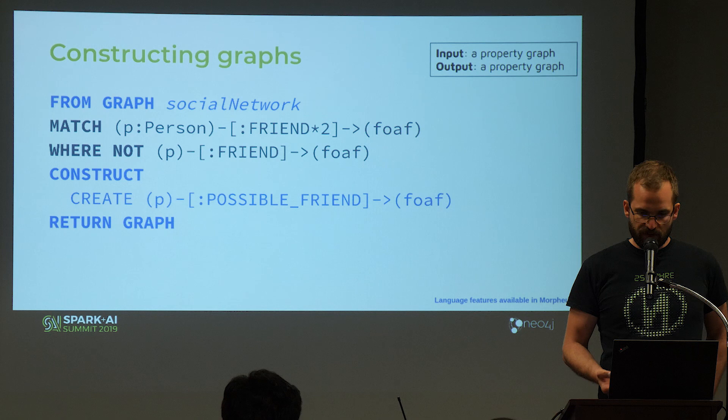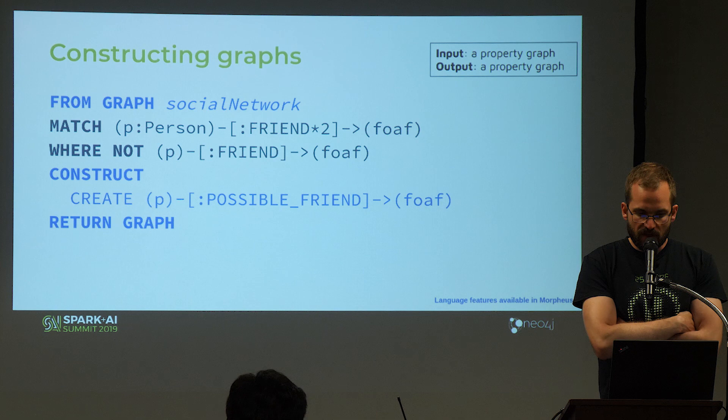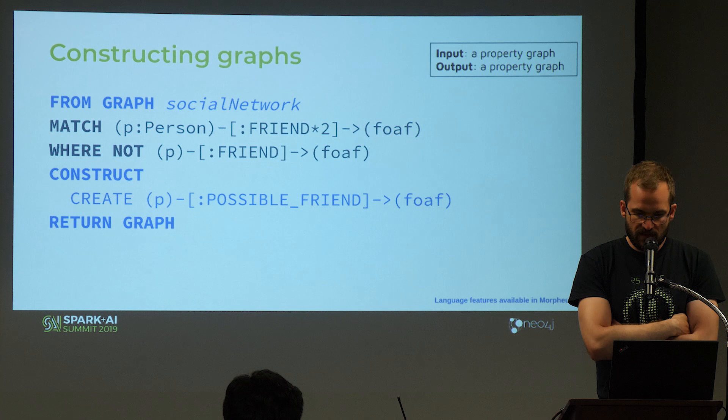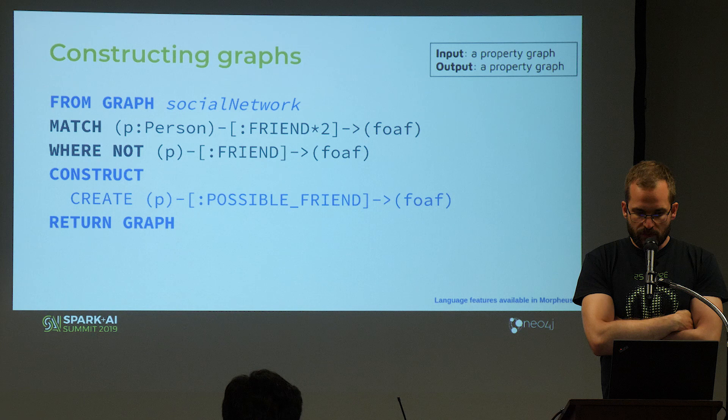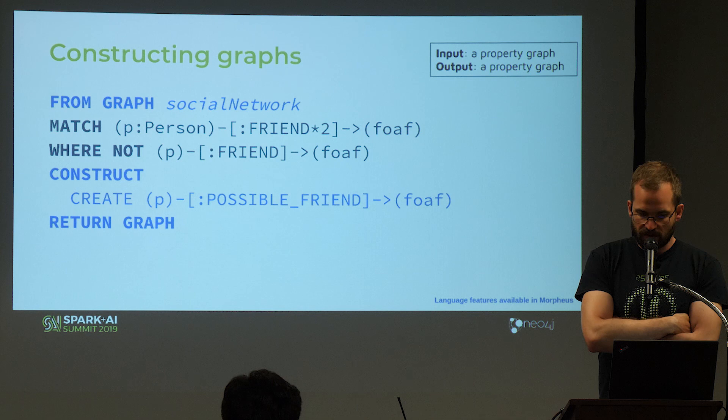In this second query, we again run on a specific graph but we return a new graph using the CONSTRUCT clause. We look for friends of friends of persons and select those not already connected — if my friend has another friend I don't know, that's a recommendation we call 'possible friend.' In the construct clause, we create a new relationship with type 'possible friend' between the person and the friend of a friend who they're not already connected to, and return this as a new graph.